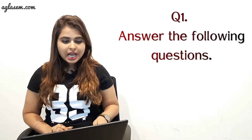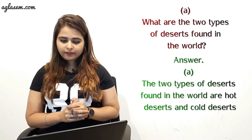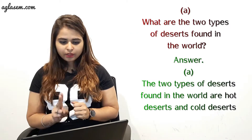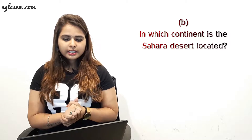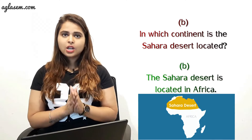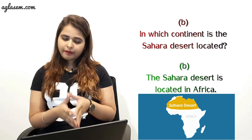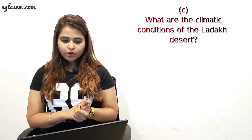Now coming towards the exercise of this chapter. The first question is: answer the following questions. Part A — what are the two types of desert found in the world? The answer is: the two types of desert found in the world are the hot desert and the cold desert. Part B — in which continent is the Sahara desert located? The answer is: the Sahara desert is located in Africa.